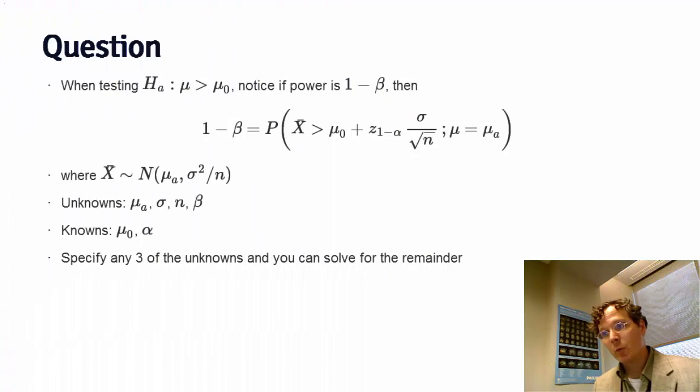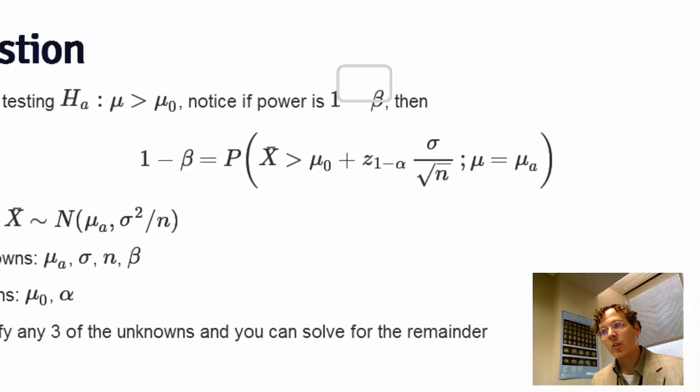So let's just reiterate, when we're testing our alternative being that mu is greater than mu naught, and then I'm going to specify power in terms of 1 minus beta, where beta is the type 2 error rate, then we get this equation.